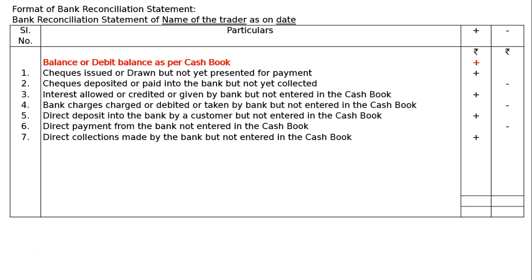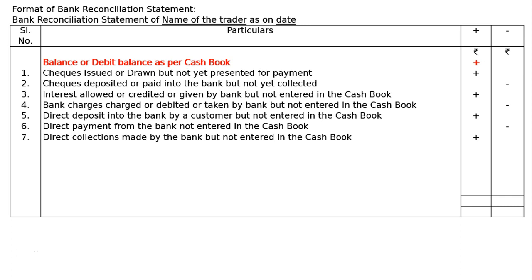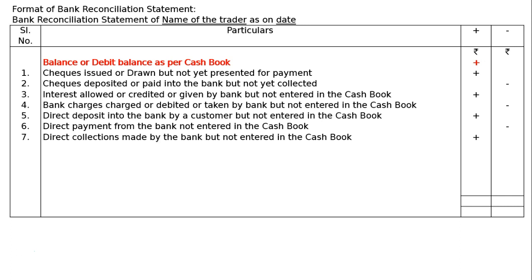The seventh item is a direct collection made by the bank not entered in the cash book. At times the bank collects dividend, interest, house rent, etc. on behalf of the client as per instructions. This increases the pass book balance, so you have to increase the cash book balance to make it equal to the pass book balance.